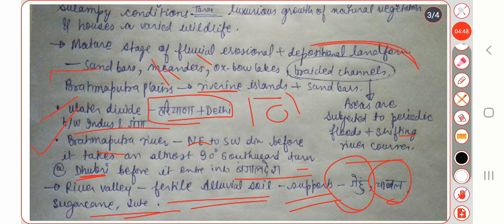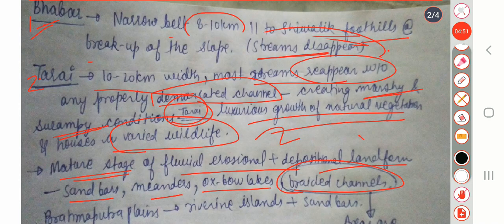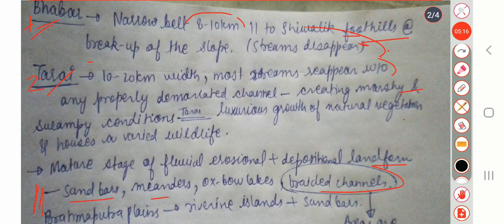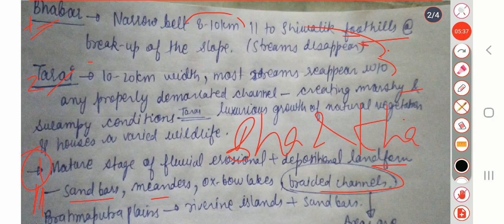To summarize, we have discussed Bhabar, Terai, and Alluvial Plains. Bhabar is the first zone, Terai is the second, and Alluvial Plains is the third zone starting from that region. Alluvial Plains are basically divided into Bhangar, which is the old one, and Khadar, which is the new one.